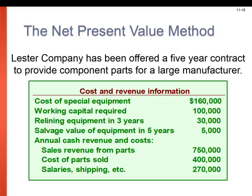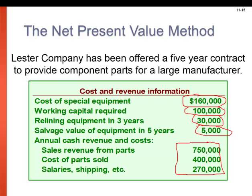In this example, Lester Company has been offered a five-year contract to provide component parts for a large manufacturer. Here are some of our cash outflows: $160,000 for buying the equipment, $100,000 tied up in working capital, and a $30,000 cash outflow for realigning equipment in year three. For cash inflow, we're going to get a salvage value of $5,000 when we're done with the equipment. The last block of information is all related to the normal operating income we'll receive with this equipment.